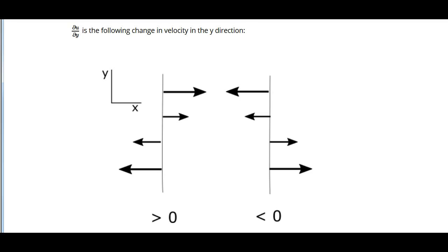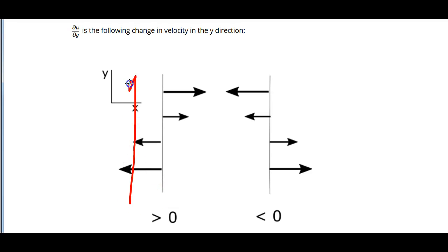Now look at the case of the change in u with respect to y. It does not matter that u is in the x direction, perpendicular to y, because we are interested in how u changes as a function of y. As y becomes more positive, on the left, u becomes less negative, then positive, then more positive. Thus, the partial derivative is a positive change in u over a positive change in y, and therefore is positive, or greater than zero.